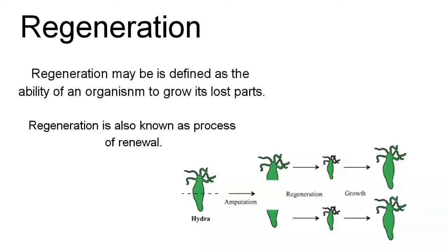Regeneration may be defined as the ability of an organism to grow its lost parts. When an organism loses its part, the body is capable of growing that lost part back. This method of asexual reproduction is found in protozoa, sponges, hydra, earthworms, and starfish.